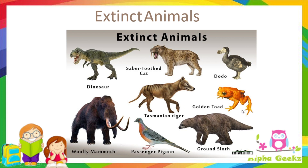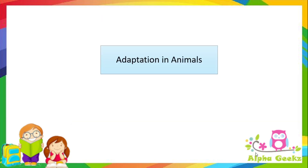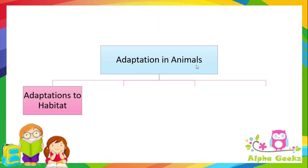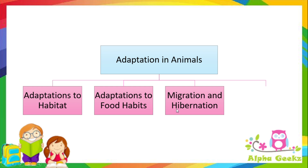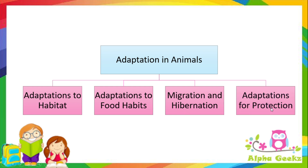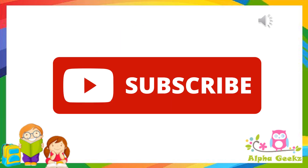Adaptations in animals are further classified into: adaptations to habitat, adaptations to food habits, migration and hibernation, and adaptations for protection. If you liked this video, hit the like button, subscribe, and don't forget to press the bell icon to get new notifications. Thank you!